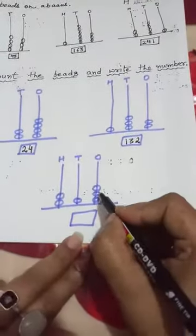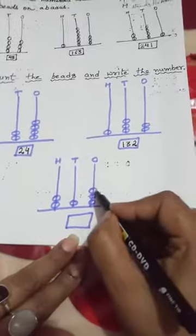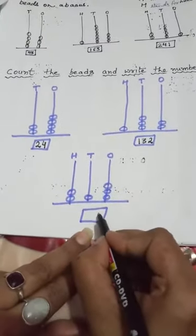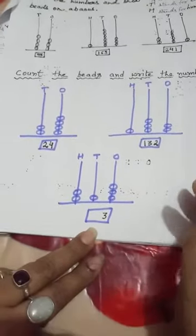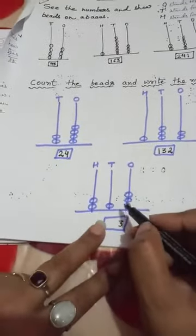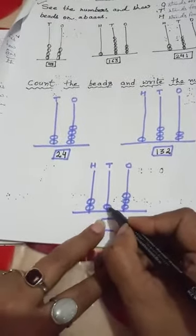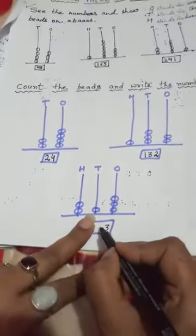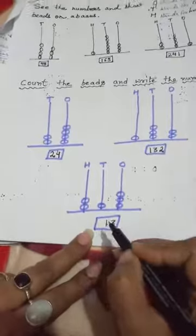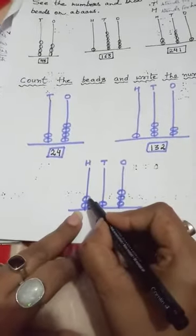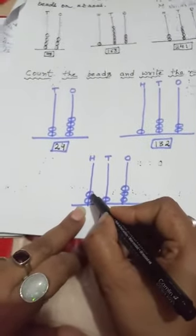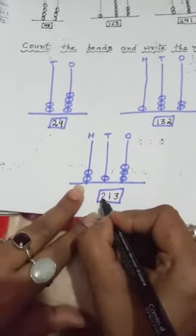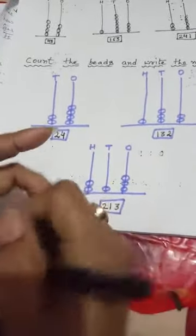Last one: in ones place value, how many beads? 1, 2, 3. You also practice at home. In tens place value, only 1 bead, so we write 1. And in hundreds place value: 1, 2 — so we write 2.